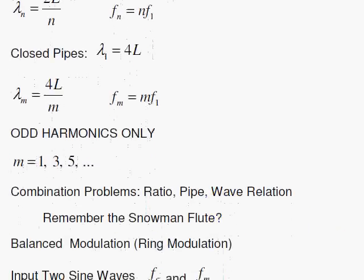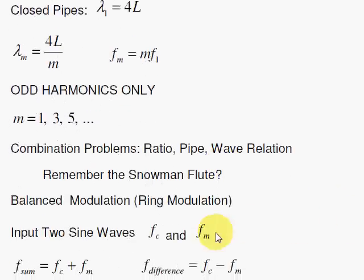For balanced modulation or ring modulation, you input two sine waves. We consider one to be a carrier, one to be a modulator. And you get the sum and the difference of the two sine wave frequencies. And that sounds very crazy or weird. That's an inharmonic sound, typically.